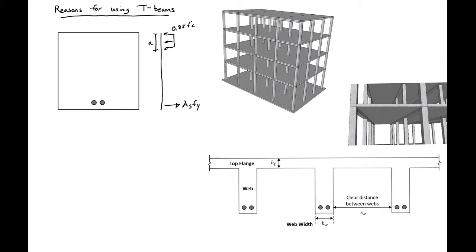So you can see that the only portion of the beam, or of the concrete portion of the beam, that's going to contribute to our moment capacity is this section that I'm shading red. The rest of the concrete is only adding weight.